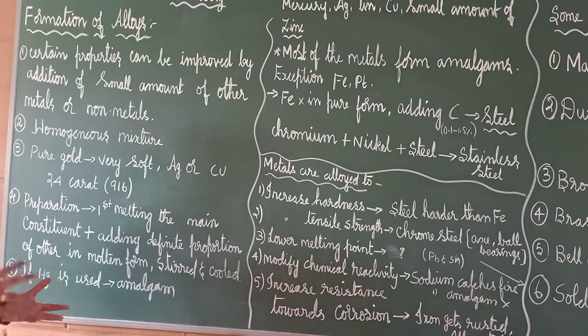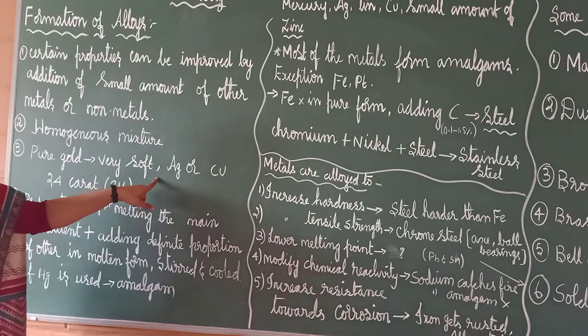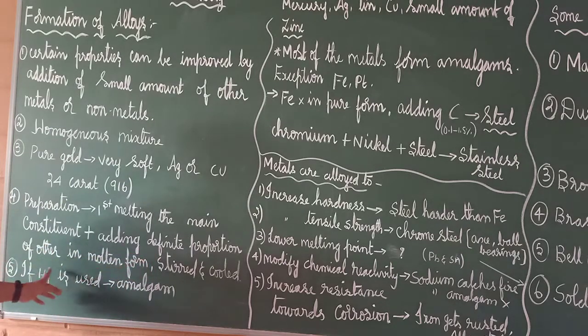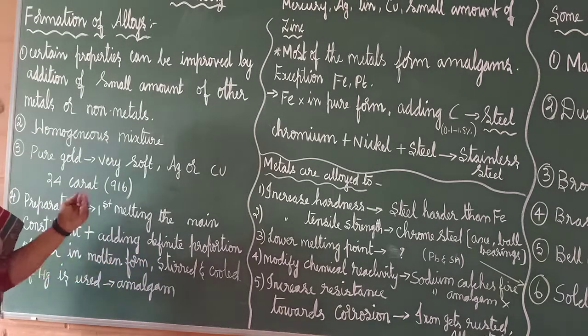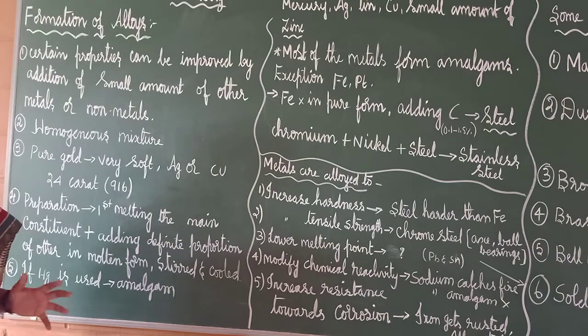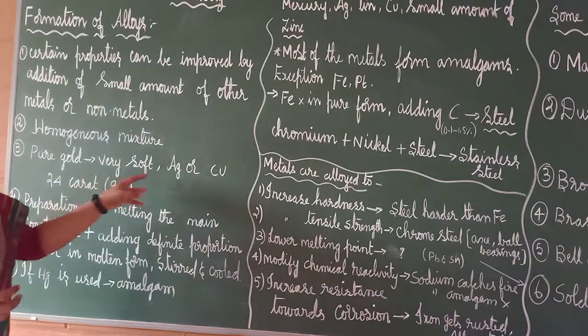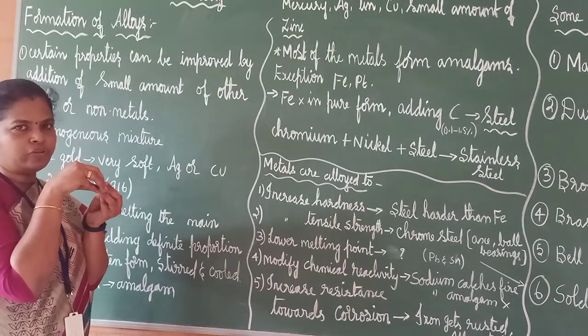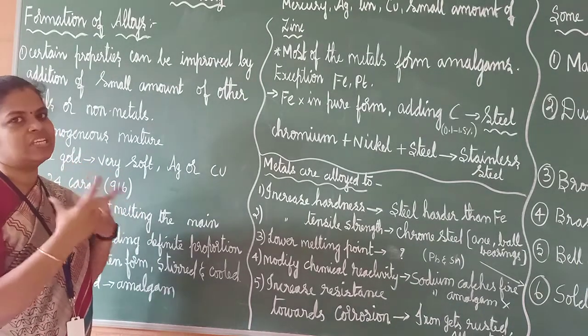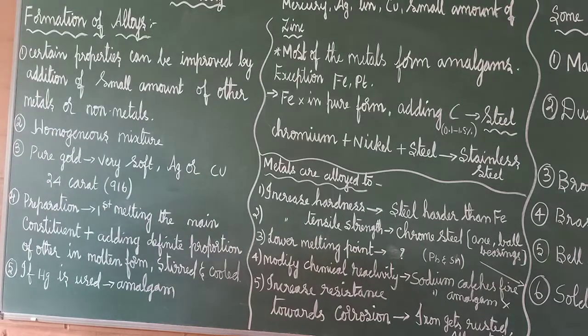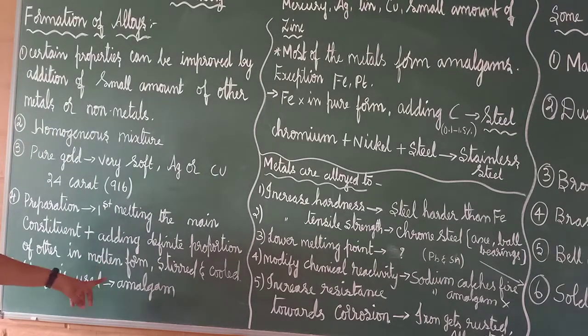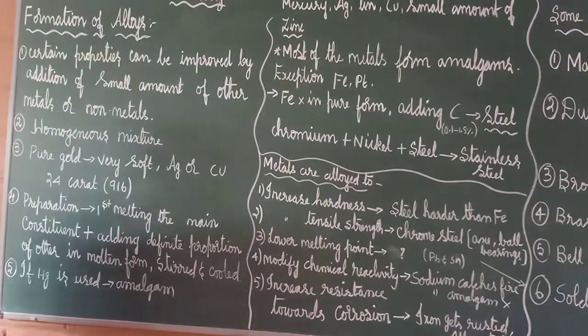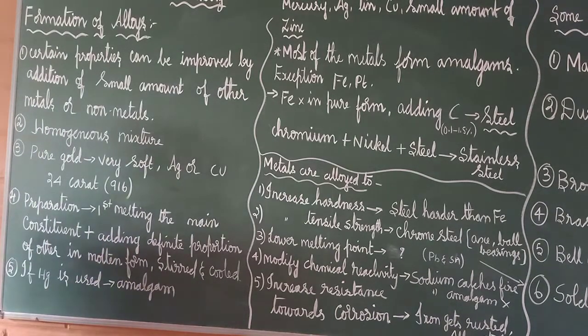You can't add however you like. Here I told you two parts. Some definite proportion. Definite proportion or other thing also should be added in the molten form. Then only it will be mixed. Or if you are just adding some gold and some silver like this, will you get the proper pure form? No. So, homogeneous mixture. In the molten form, it should be added. And after stirring, it should be cooled. You will get the alloy.